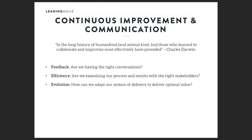When thinking about improving our collaboration and communication model, we want to incorporate continuous improvement. We won't have a perfect collaboration model tomorrow, but we can get together and talk about what went well and what didn't so we can start adapting. The three main areas to focus on are: feedback — are we having the right conversations? Efficiency — are we examining our processes and results with the right stakeholders? And evolution — how can we adapt our system of delivery to ensure optimal value for the organization?